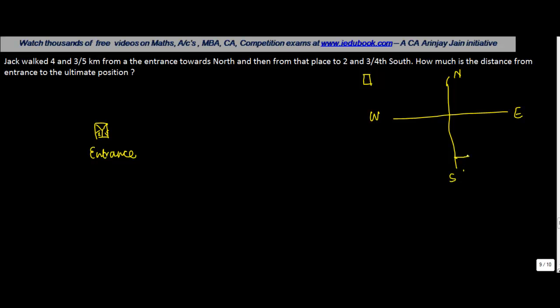Let's say the entrance is at this point and from here he moved towards north by 4 and 3 by 5 kilometers. He walked from this point to the other point and then from that place to 2 and 3 fourths south. So once he reached this place he moved and came back towards south which is 2, 3 by 4 kilometers south. So from this place you moved north and then you came back south.